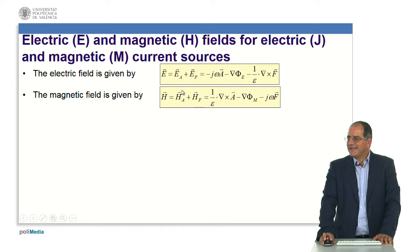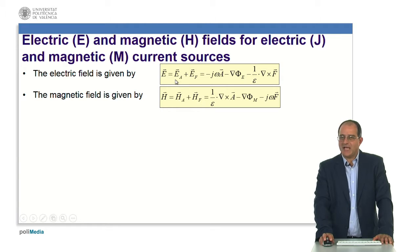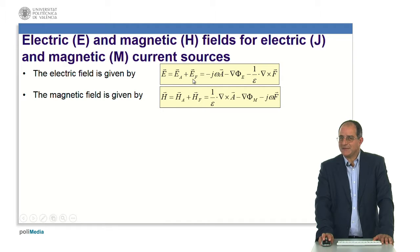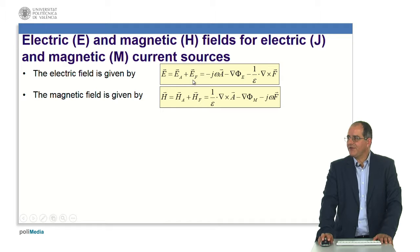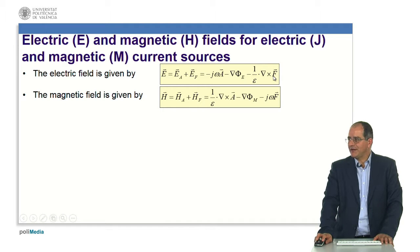The electric field is given by the sum of the electric field from the actual magnetic vector potential and the electric field coming from the fictitious magnetic electric vector potential. For the general case, the electric field will be minus j omega times the magnetic vector potential, minus the gradient of the electric scalar function, minus 1 over epsilon times the curl of the corresponding electric vector potential. In the problem we are tackling here — where we don't have any fictitious magnetic source — this last term will be removed.